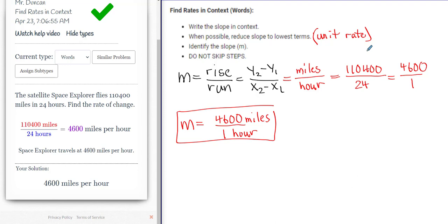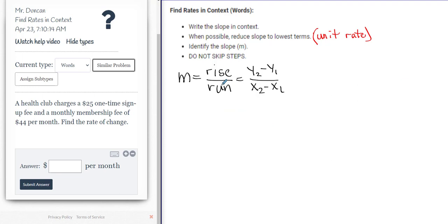Let's see if we can find - so here's the one type of problem where they're going to give you two different values. You're simply going to have to divide to get the unit rate and put it in context. But there is one other type. Let me see if I can find it. Okay, here's another type. So it's still under finding rates in context with words. So again, find the slope in context when possible, same instructions.